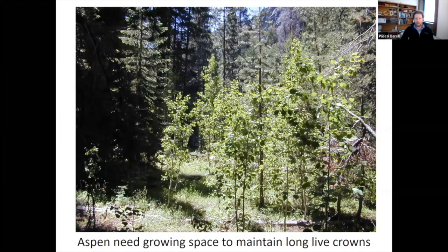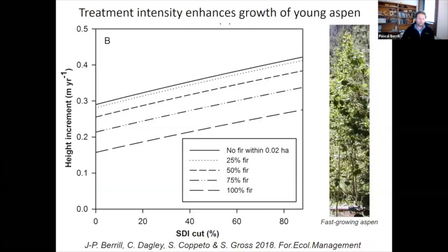Here are some vigorous young aspen saplings — they're in an opening and their crown ratio is almost 75 to 80 percent. Very vigorous young trees. These young trees have enough vigor and growth rate to recruit to the overstory and replace aging aspen.